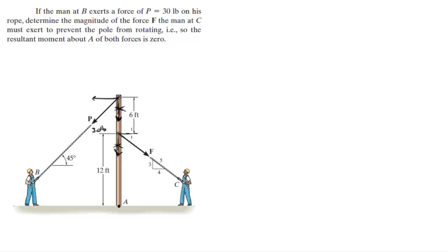So P, the X component of P is given by the 30 pound magnitude times the cosine of 45, which is given right here, and is equal to 21.2 pounds. The X component of F is equal to F times 4 over 5. That's the X component of F.